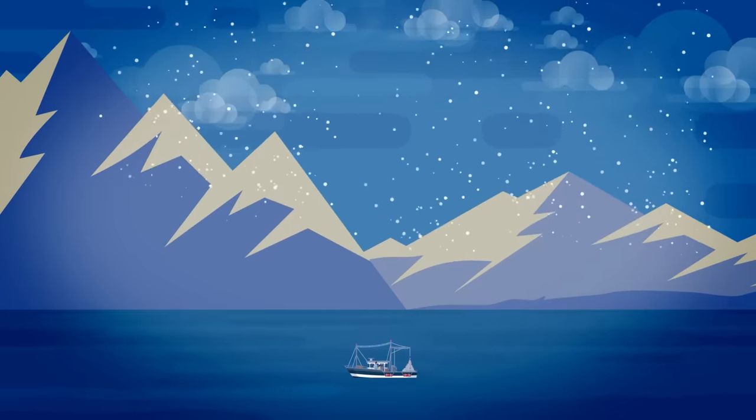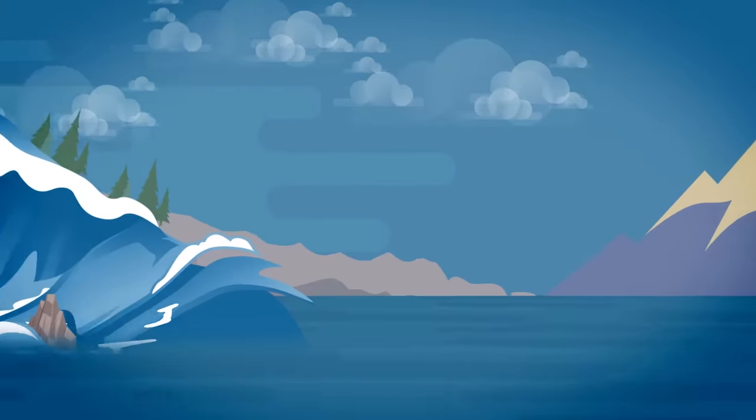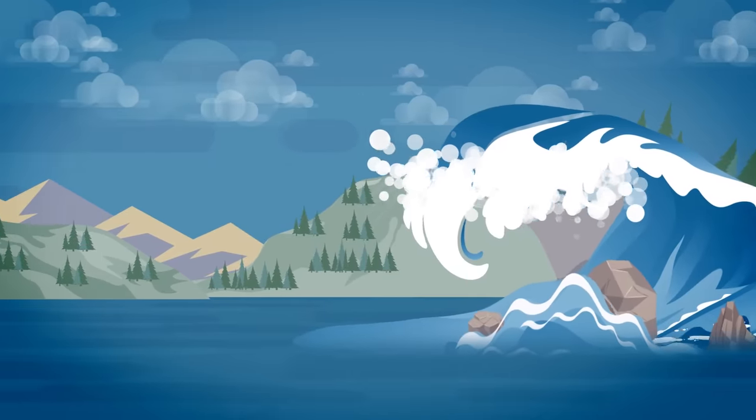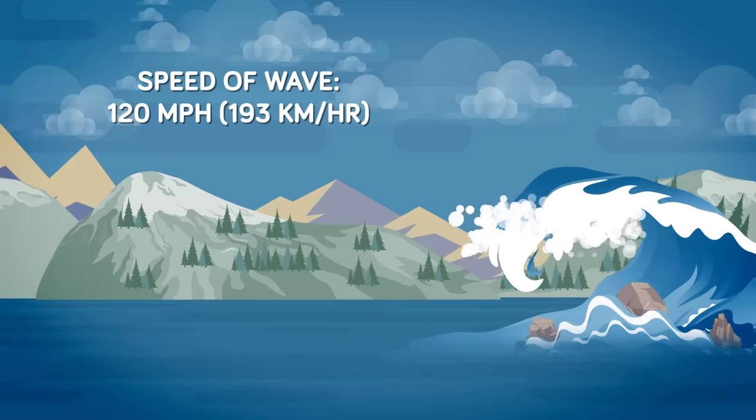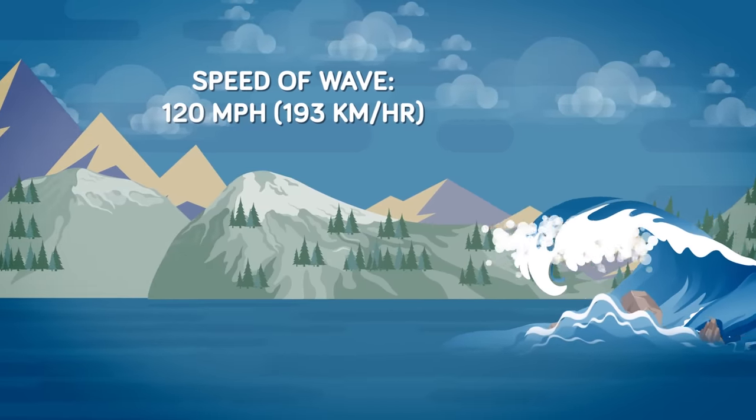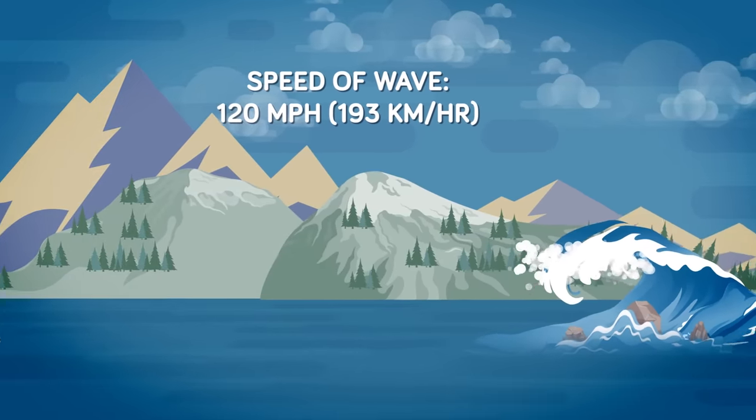Suddenly the two witnessed a wave coming toward them, so large they could hardly believe their eyes. As the wave approached though, it became smaller. Still, it was racing down the bay at about 120 miles per hour, taking out trees on the mountainside, plucking hundreds from their roots in a matter of seconds.